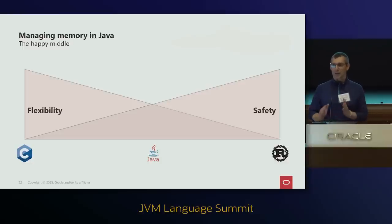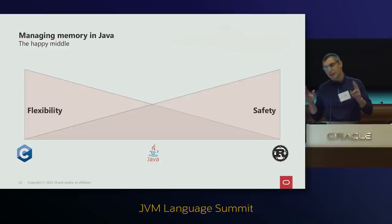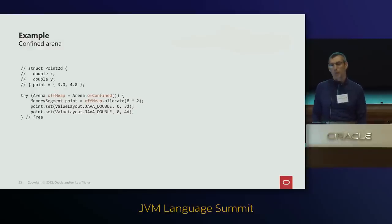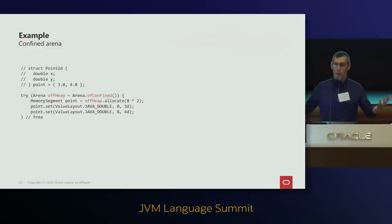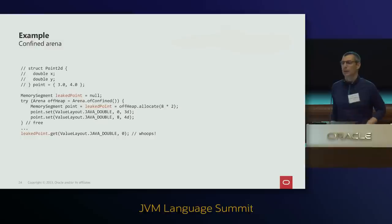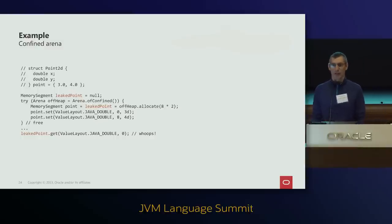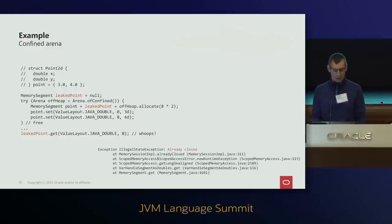Java sits in a middle ground between the flexibility of C and the safety of Rust. To use a confined Arena, the only change needed is to use a confined Arena inside a try-with-resources block instead of an automatic Arena. Memory remains valid inside the try-with-resources block, and after it closes the memory disappears immediately — no waiting for the garbage collector or cleaner. If you leak the memory segment outside the try-with-resources block and try to access it, you get an exception. The FFM API checks both temporal and spatial safety.